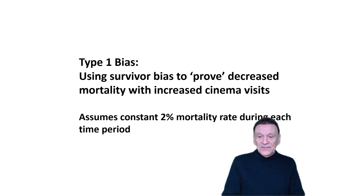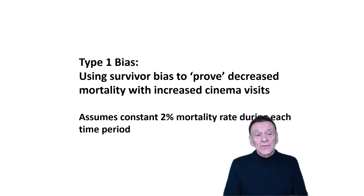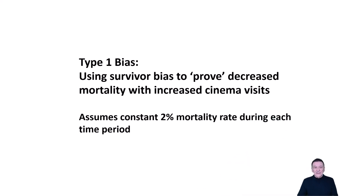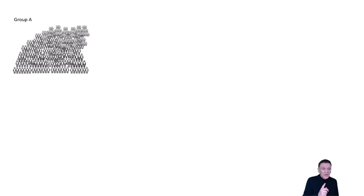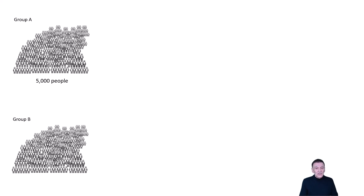What we're going to do here is assume a constant 2% mortality rate during each time period. We're going to count the number of deaths out of those who had zero visits, one visit, two visits, etc. This will inevitably result in those with the most visits having the lowest mortality rate. To understand this, imagine an experimental scenario where we select 10,000 people who have never been to the cinema, monitored over two equal time periods. Group A has 5,000 people who will be taken to the cinema at the end of the first period, and Group B of 5,000 who will not.